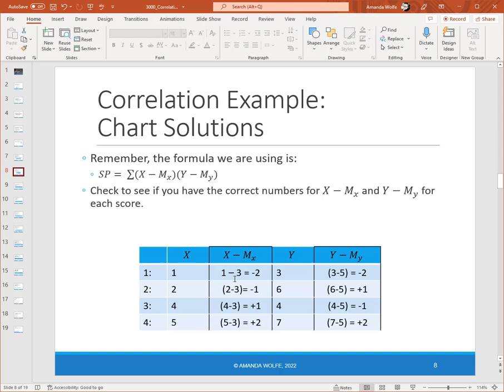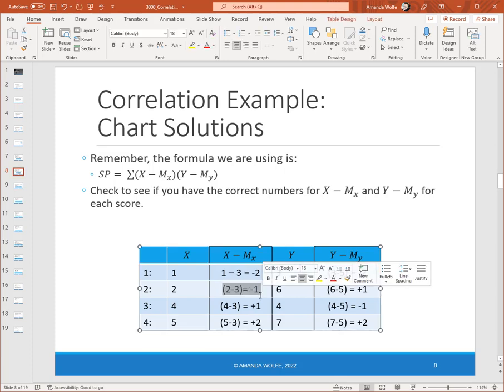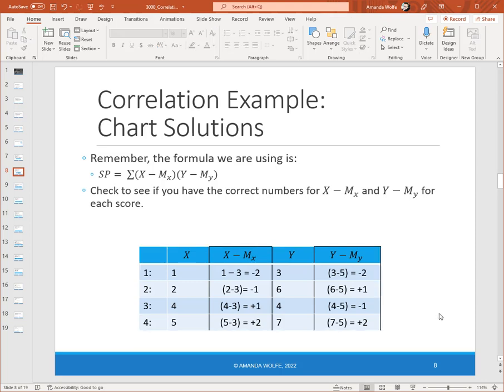So here we are on the next slide. You can see the answers. One of the mistakes that I find that students make is that they'll mix up the signs. It's really important that X comes first and then the mean of X. And that way you actually have these numbers here with positives and negatives. So check and make sure that you got the right answers.